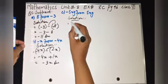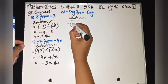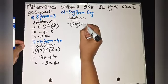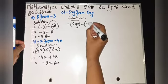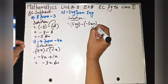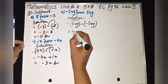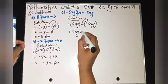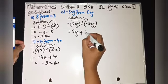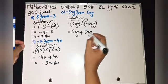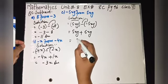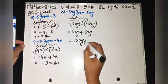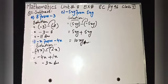Part c: same method. After 'from', copy first: five xy, close bracket, minus minus five xy. Remove the round bracket: five xy minus minus is plus five xy. Five xy plus five xy equals ten xy. Ten xy is the answer for part c.